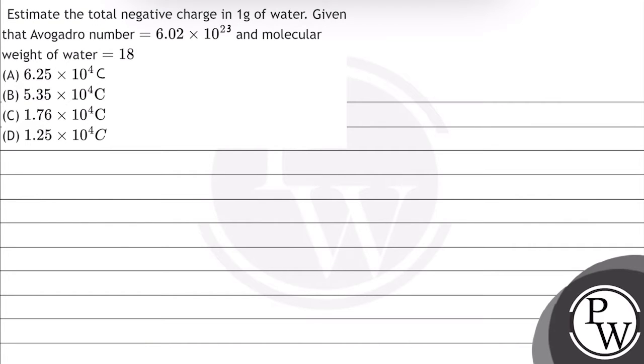Hello, let's read this question. Estimate the total negative charge in 1 gram of water, given that Avogadro number equals 6.02 × 10^23 and molecular weight of water equals 18.